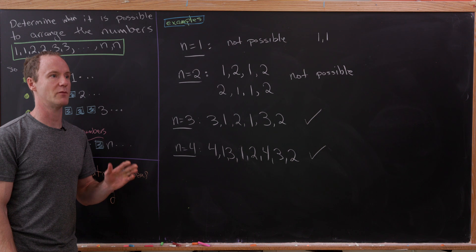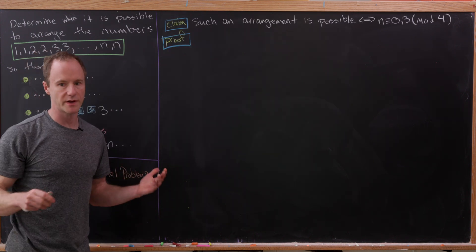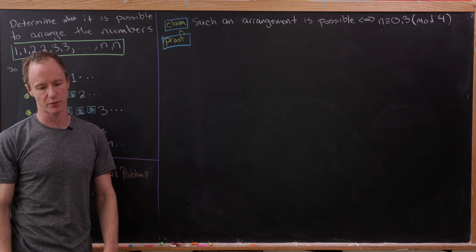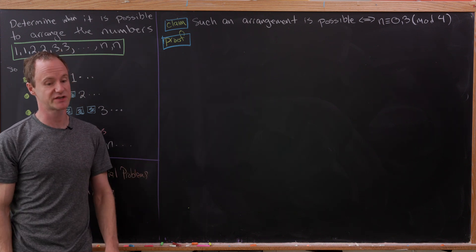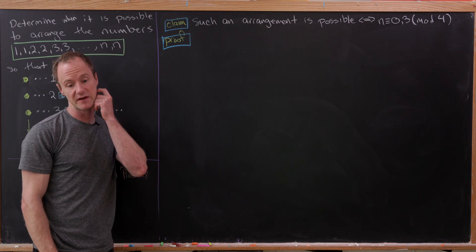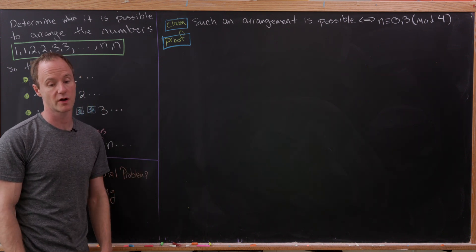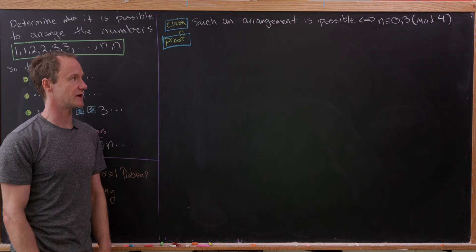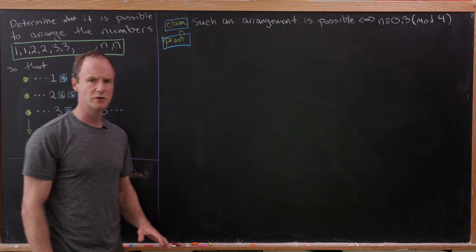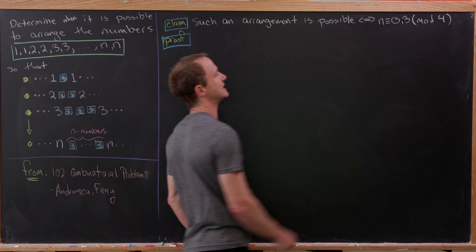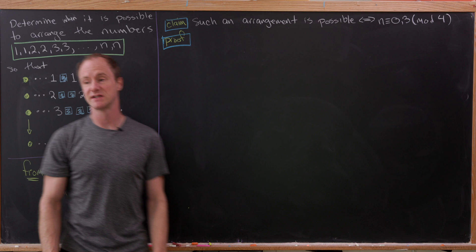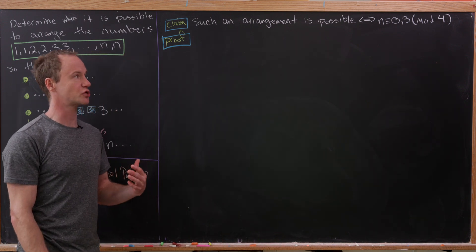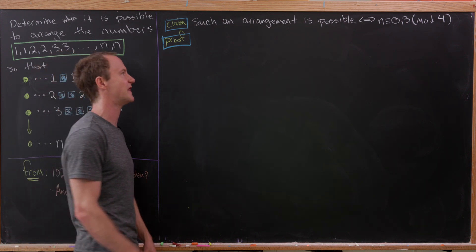So now let's get that claim on the board and prove it. This is probably the answer, which of course we have to prove. The claim is such an arrangement is possible if and only if N is congruent to 0 or 3 mod 4. We've got two things to prove here. It's an if and only if statement. We'll look at the case when N is 0 or 3 mod 4 and exhibit such an arrangement. And then we'll look at the case when N is 1 or 2 mod 4 and show it's impossible. Let's start with that first.